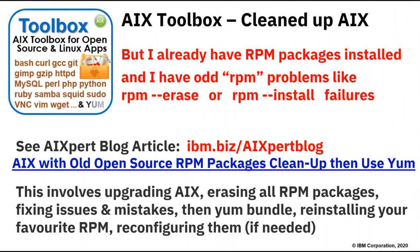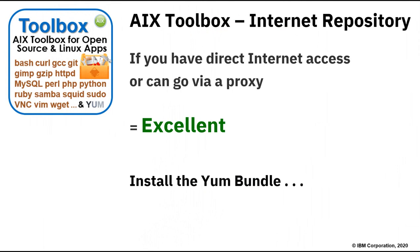Fortunately I've done a lot of work to figure out how to get you out of this. If you go to the AIX expert blog, there's an article called 'AIX with older open source RPM packages — clean up then use YUM.' This involves upgrading AIX, erasing all your current RPM packages, fixing issues and mistakes, then adding the YUM bundle and reinstalling your favorite RPMs, and reconfiguring them. For me one that needed reconfiguring was Apache, which went from 2.2 to 2.4 — the config files and modules had changed, but that was probably a good thing and I should have upgraded earlier.